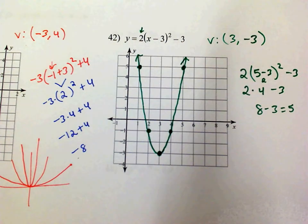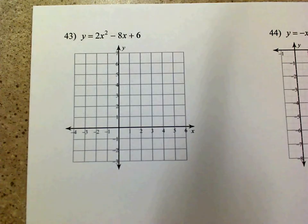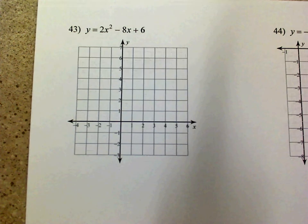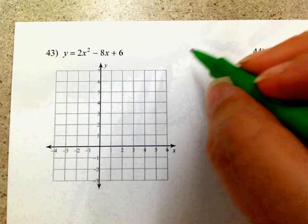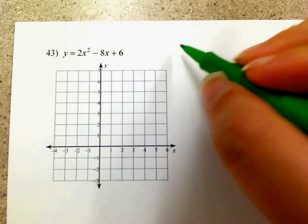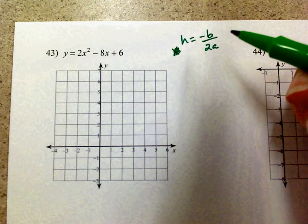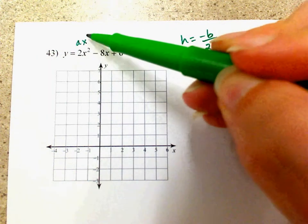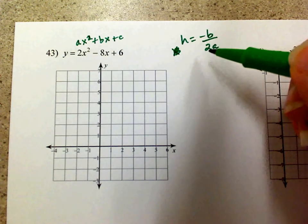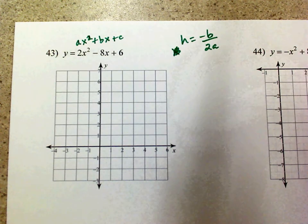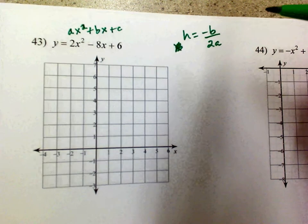When it's in vertex form, you don't need a calculator to graph it. But when it's in standard form, you can still figure out the vertex. The x-coordinate of your vertex, h, is negative b over 2a, where the equation is ax squared plus bx plus c. You could find h by doing that formula, and if you want to find the y value, just plug the x value back in.